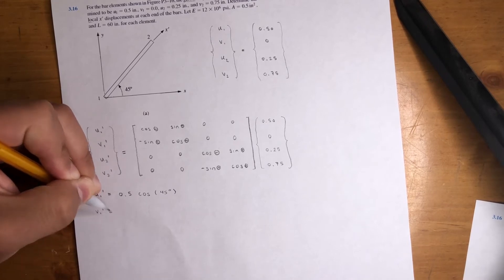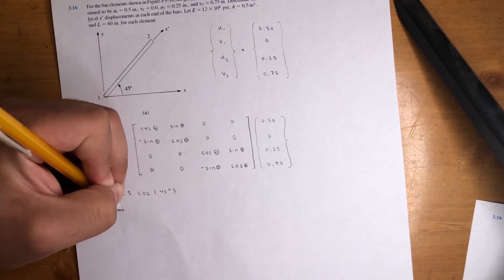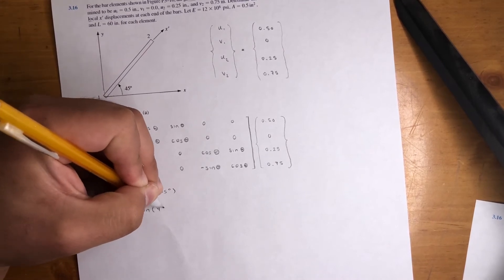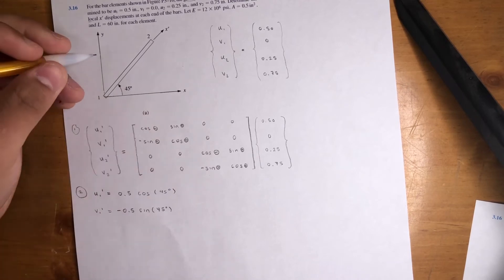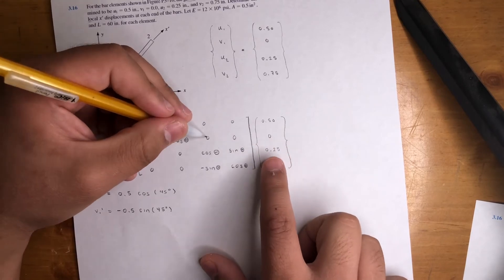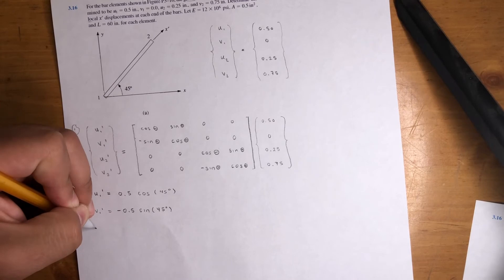V1 prime is negative sine theta times 0.5. So it's negative 0.5 sine 45, plus cosine of theta times 0, which is 0, 0, 0. So again, it's only one term for that one too.